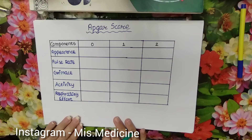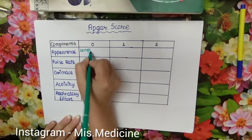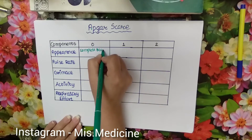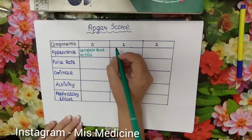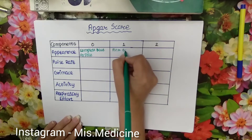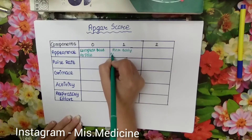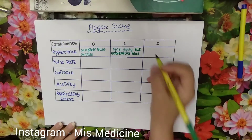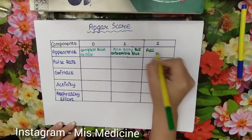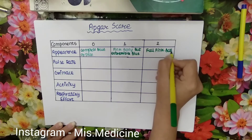For appearance: when the child is completely blue or pale, the score is 0. When the baby's body is pink but extremities are blue, the score is 1. When the body is fully pink, the score is 2.